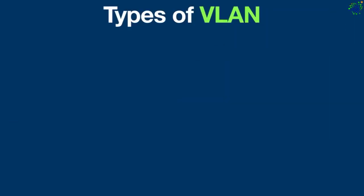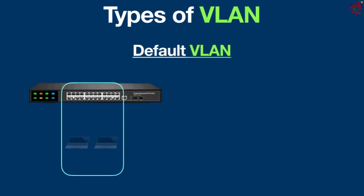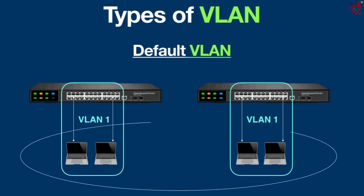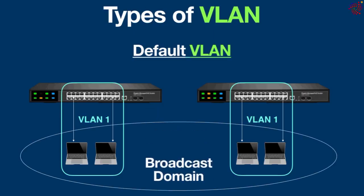Now here are some of the most common types of VLANs. Default VLAN: When the switch initially starts up, all switch ports become a member of the default VLAN. Generally all switches have a default VLAN named VLAN 1, which makes them all part of the same broadcast domain. Using default VLAN allows any network device connected to any switch port to connect with other devices on the other switch ports. One unique feature of the default VLAN is that it cannot be renamed or deleted.